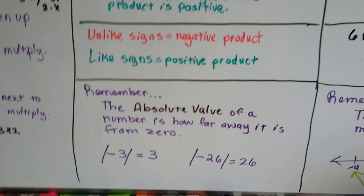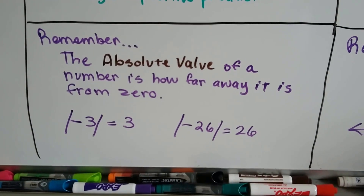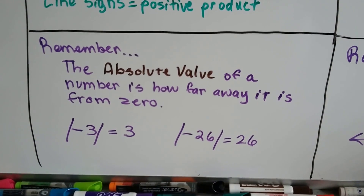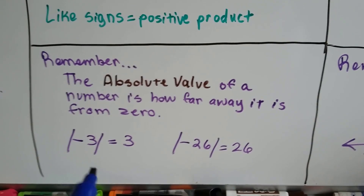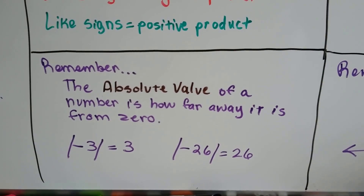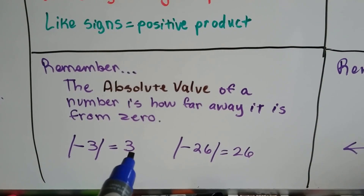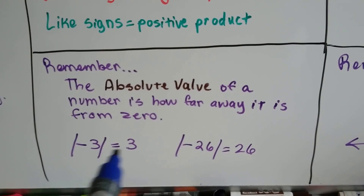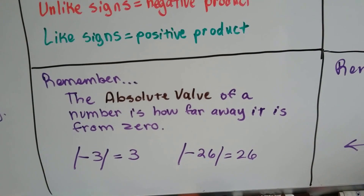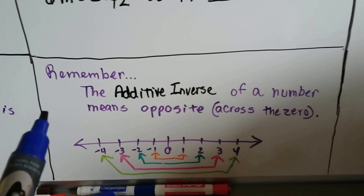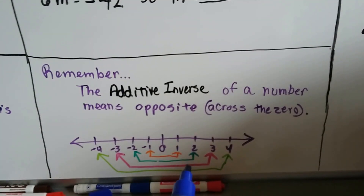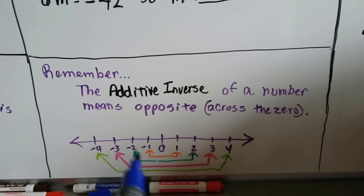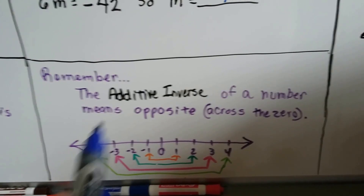The absolute value of a number is how far away it is from zero. The absolute value of 3 is 3, and the absolute value of 26 is 26 — that many spaces from zero. The lines around a number mean absolute value; they tell you to take away the sign and write how many spaces it is from zero. The additive inverse of a number means its opposite — across from zero. The additive inverse of 2 is negative 2, and the additive inverse of negative 4 is 4.